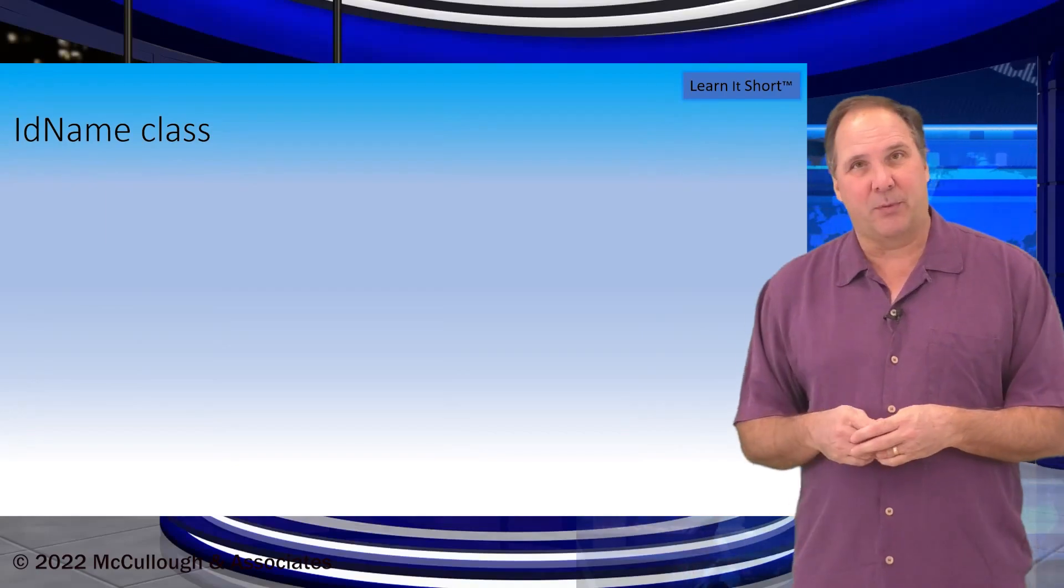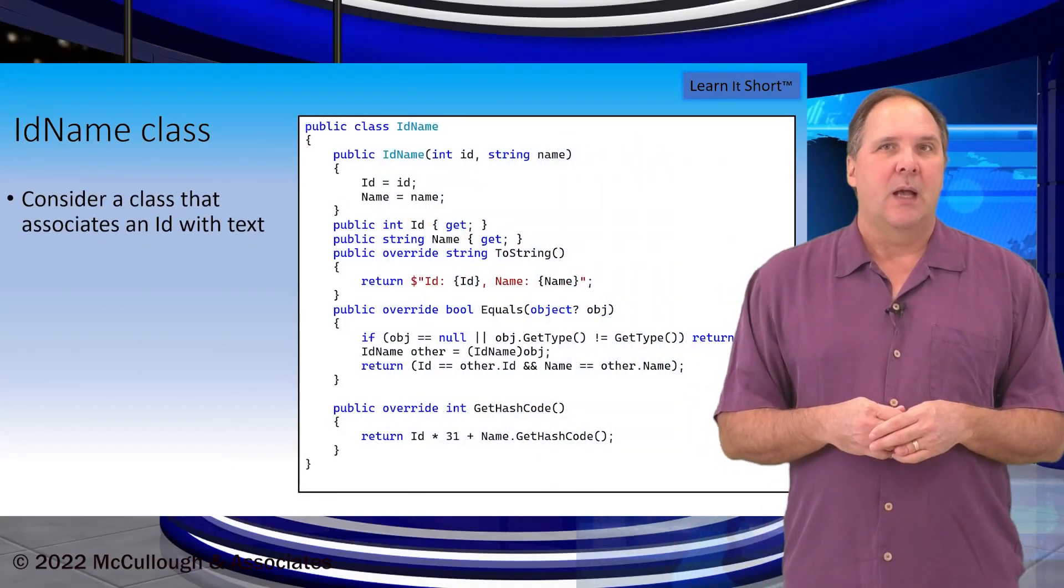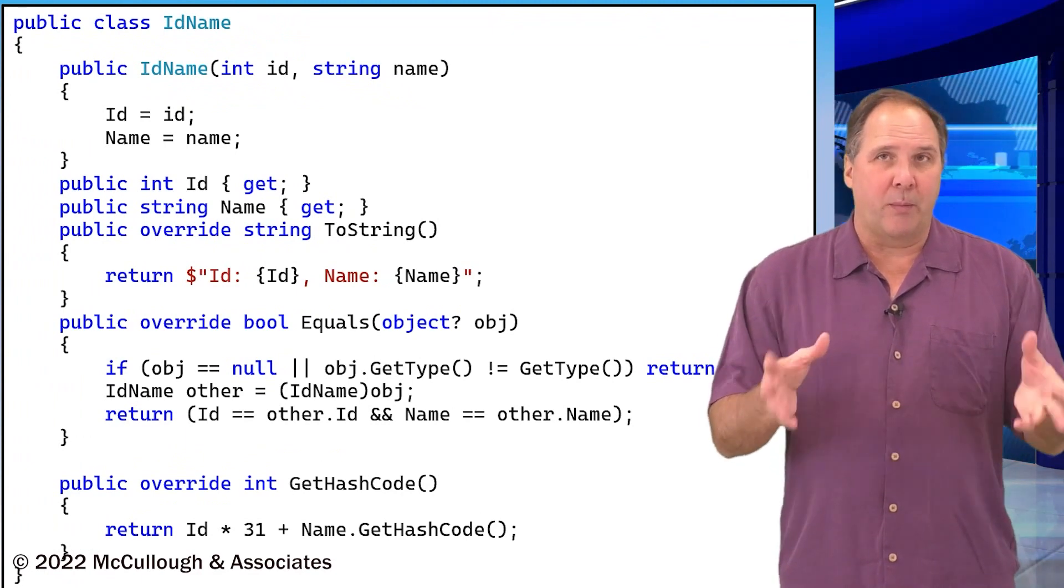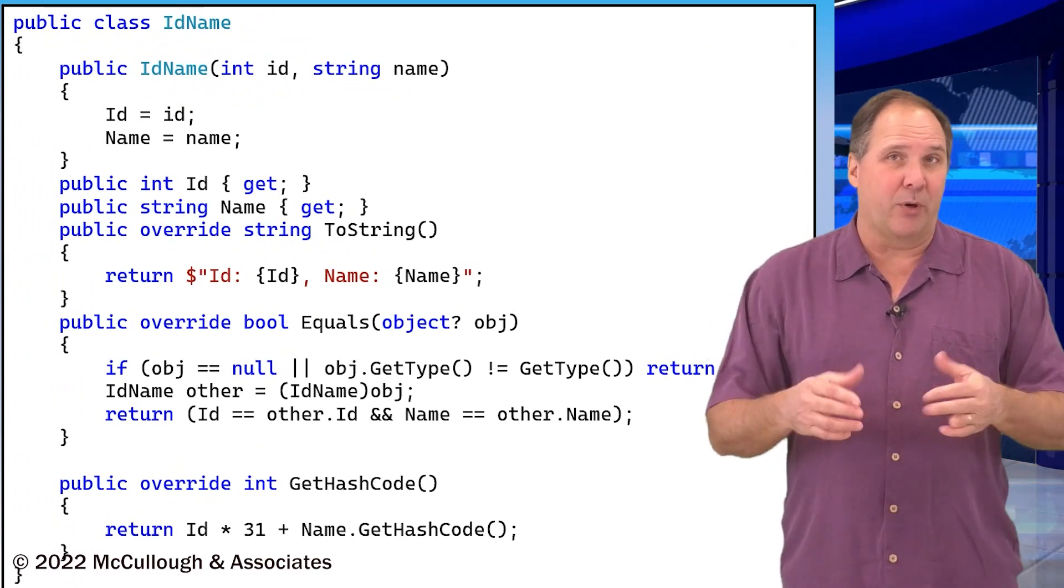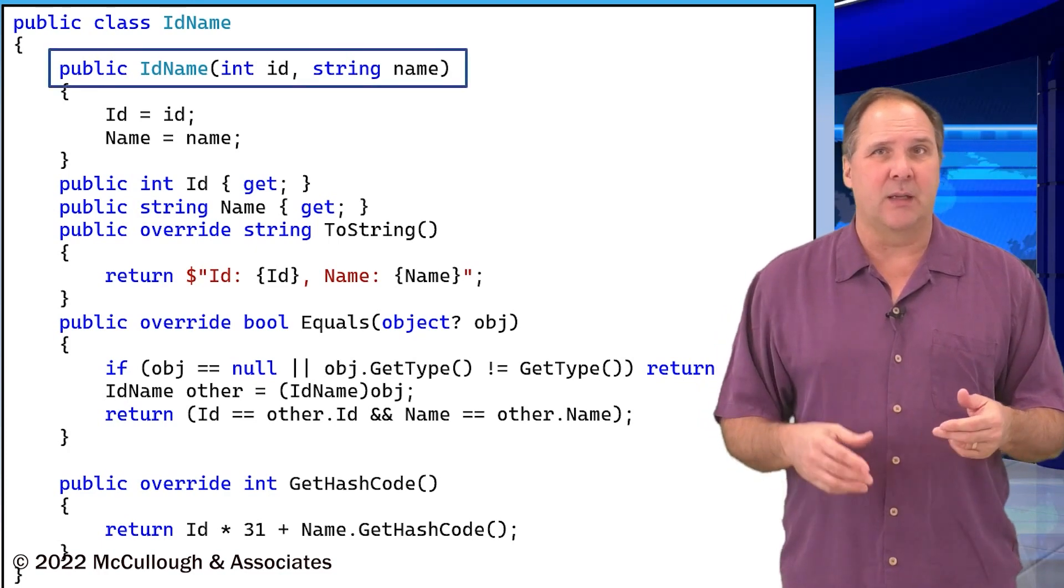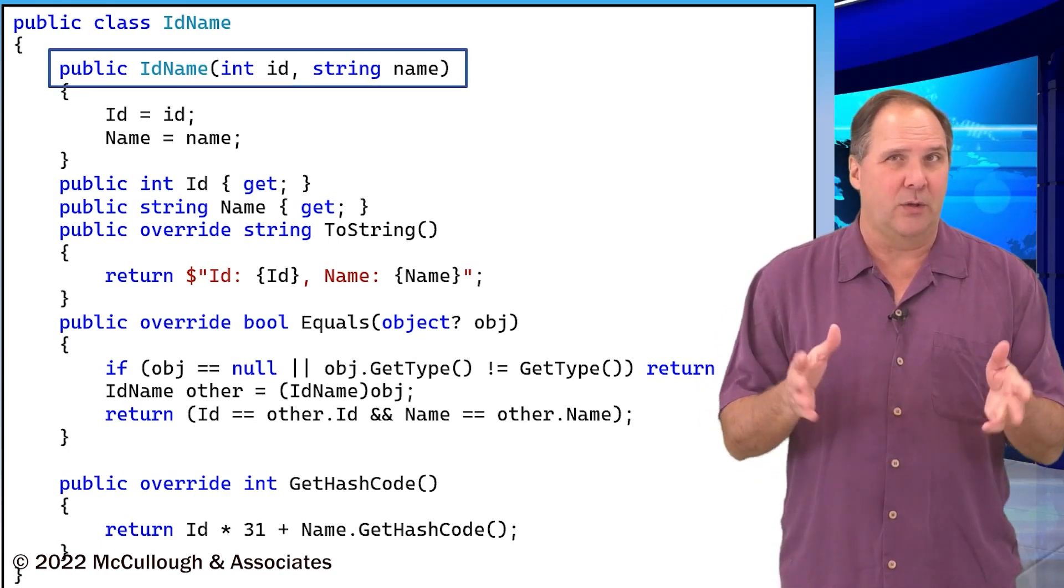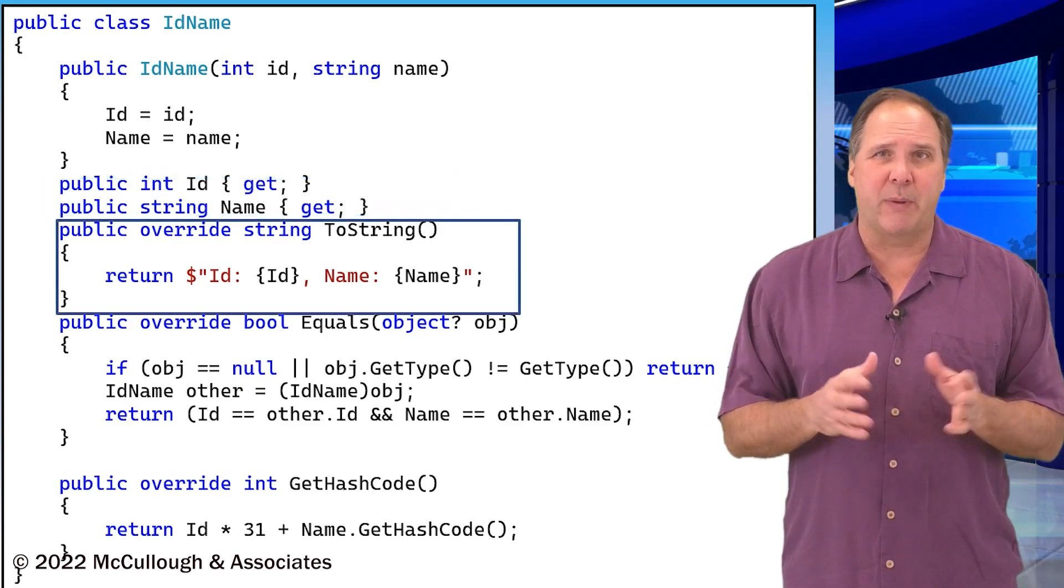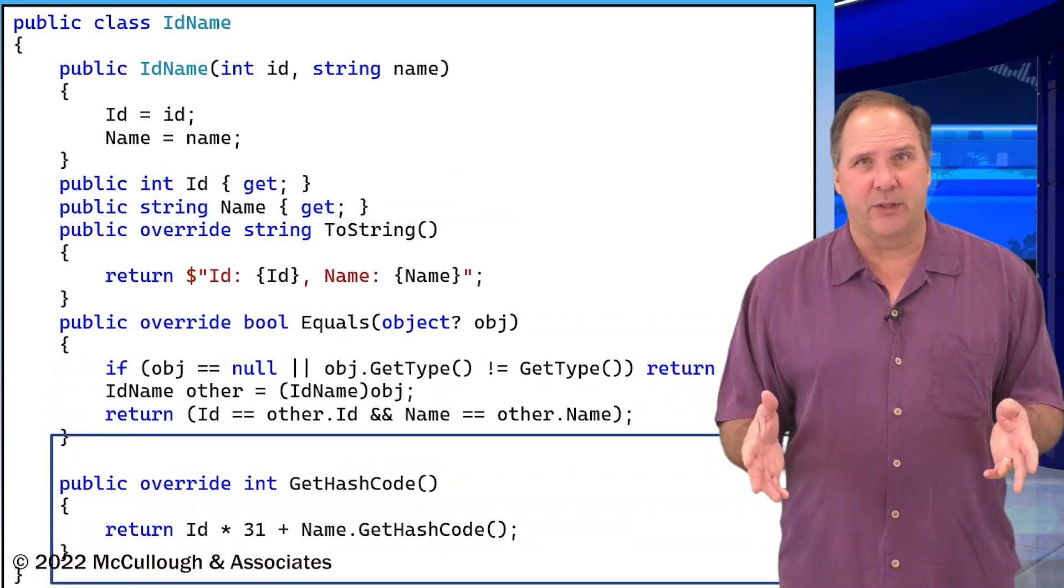Now take this class for example id name. To make this class robust we would need to implement parametrized constructors, properties, the ToString method, equality semantics including the hash method. That's a lot of trouble to go to especially when the implementation is pretty trivial.